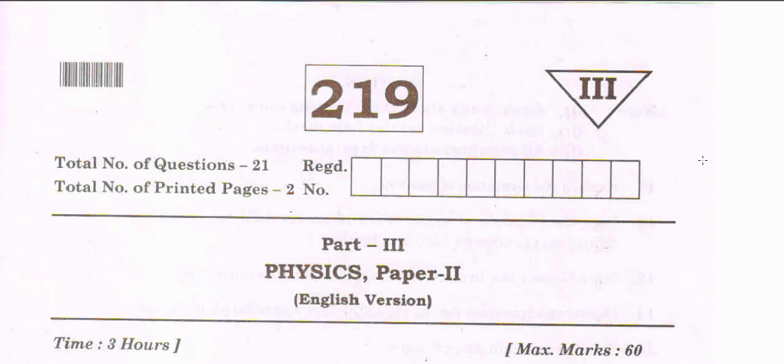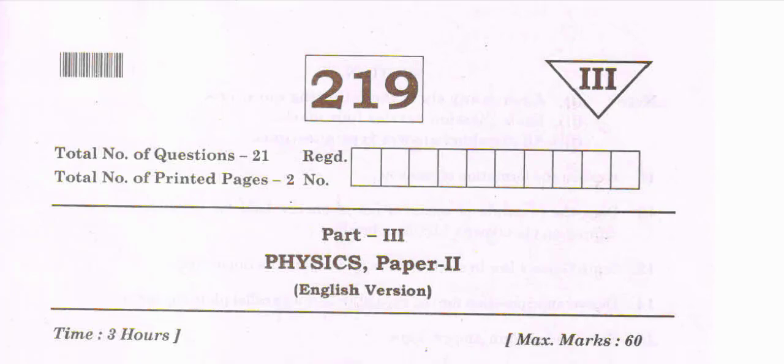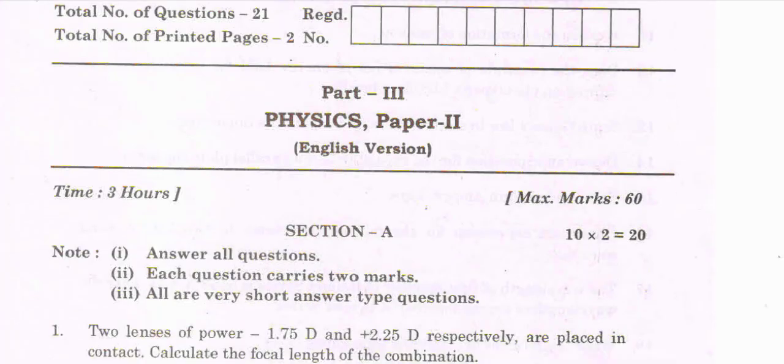Hi students, this is the intermediate second year physics paper. The main thing about the physics paper is that you have a 60 marks paper. The first section is 10×2 equals 20 marks.